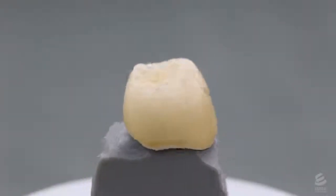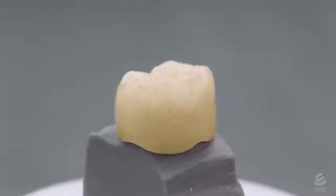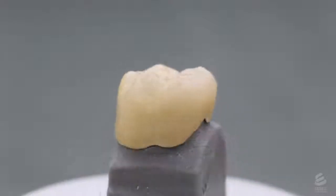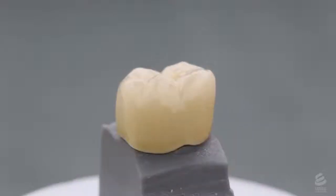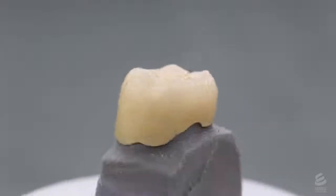The crown goes through some finishing steps, including detailed painting and glazing, which gives the crown a natural, tooth-like appearance. It is now ready to be shipped back to the dentist, who will place it in the patient.